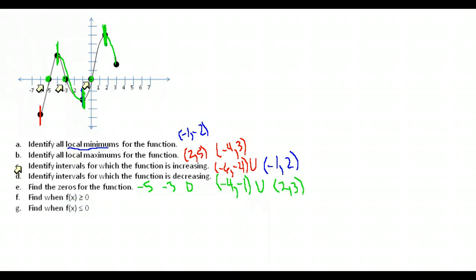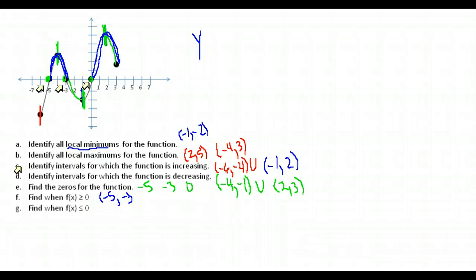Find where f(x) is greater than or equal to zero. Remember, f(x) is the same as y, so we want where y is greater than or equal to zero — above the x-axis. The first section goes from x = -5 to x = -3, and the second section goes from x = 0 to x = 3. Square brackets are used since the condition includes equal to zero.